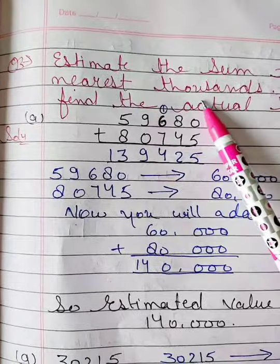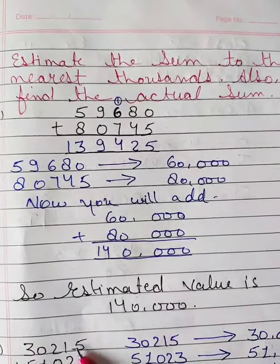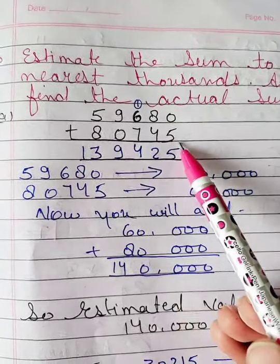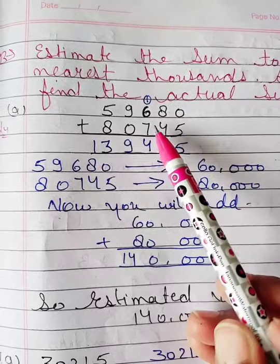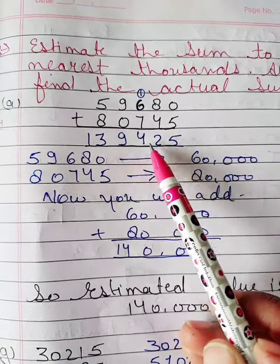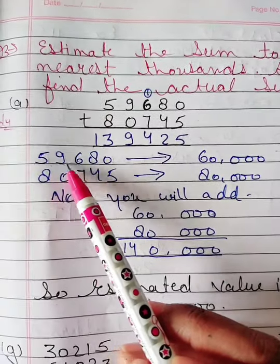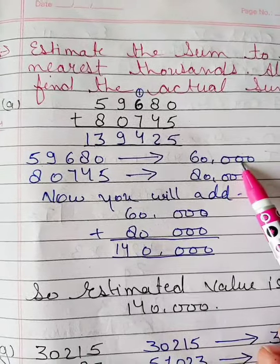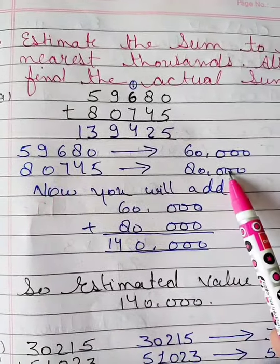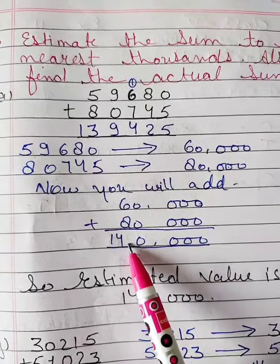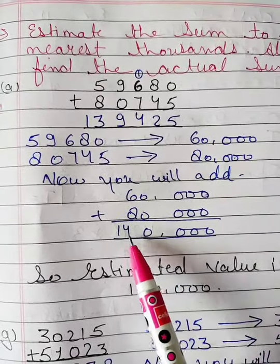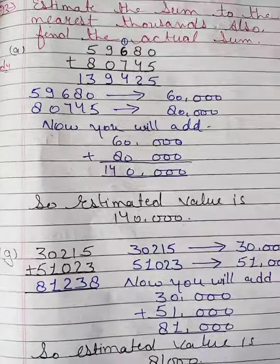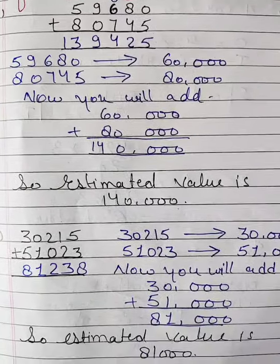Now question number 3. Estimate the sum to the nearest thousands and find the actual sum also. Here is 59680 and here is 80745. When you will add, you will get here 139425. So 59680, you will write here 60000 to round it off, and 80745 you will write 80000. Now you will add both values, so your estimated value is 140000.